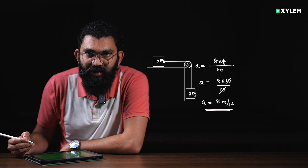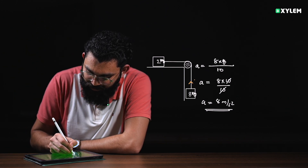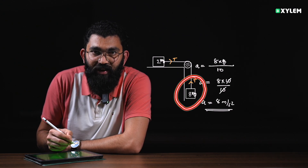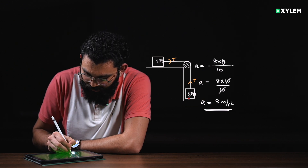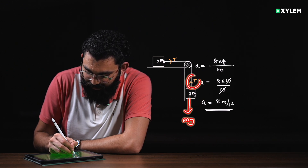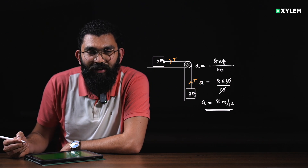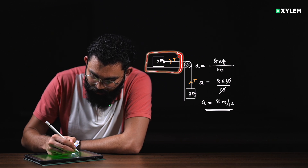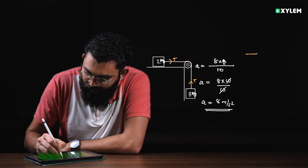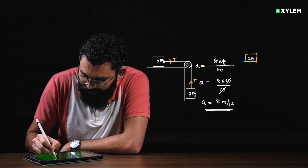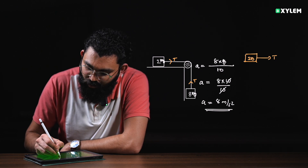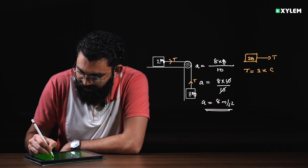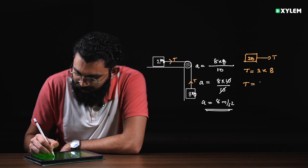Acceleration is equal to 8 meters per second squared. Tension is always away from the body. For the 2 kg block, the acceleration is the same at 8 meters per second squared. So tension equals 2 times 8, which equals 16 N.